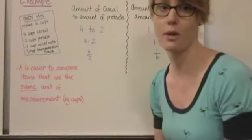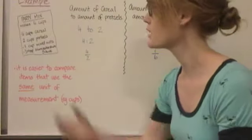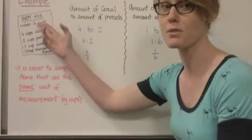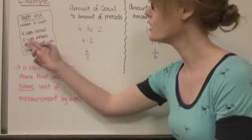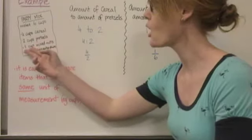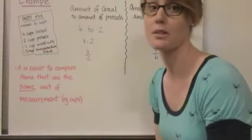Here's an example of when we might use a ratio. Here I have a recipe for party mix. As you can see, it makes 6 cups total. Within the party mix, we need 4 cups of cereal, 2 cups of pretzels, 1 cup of mixed nuts, and 3 tablespoons of Worcestershire sauce.